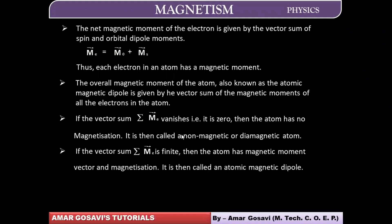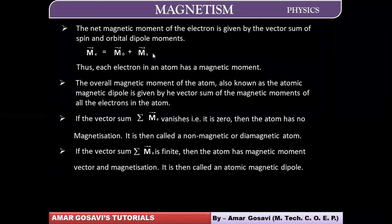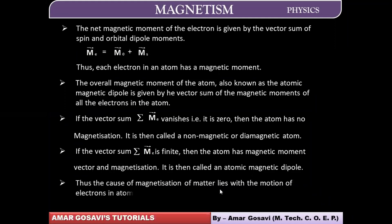If the vector sum is finite and does not vanish — when can that happen? When the nullification is not complete, there would be a residual effect remaining. In that case, the resultant magnetic dipole moment will be finite and the atomic magnetic moment will have some value. Such material we call a magnetic material. Therefore, the cause of magnetization of matter lies with the motion of electrons in the atom.